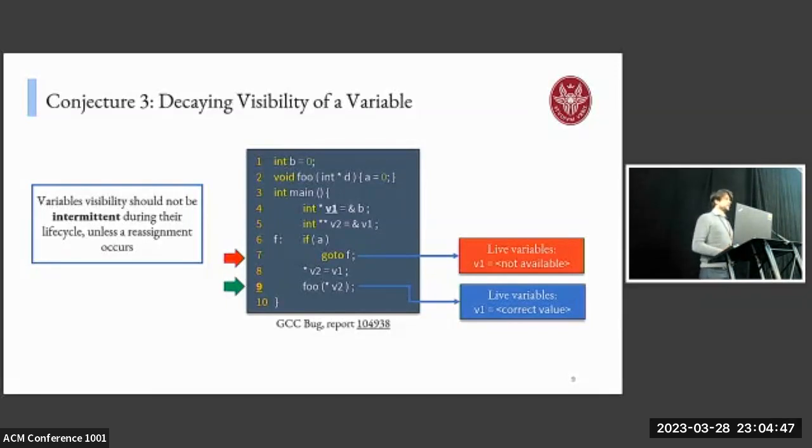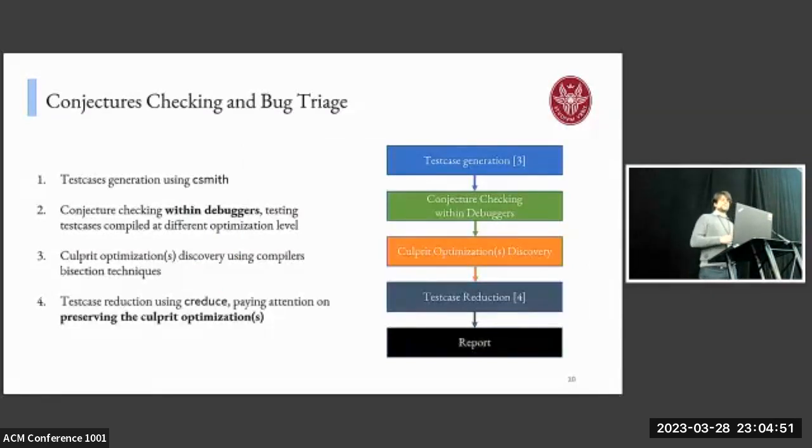To test our methodology, we developed a pipeline for finding and analyzing completeness bugs in an automated fashion. It is made of the following steps: First, we perform a test case generation phase using the compiler fuzzer Csmith. Then we check the conjectures within the debuggers, testing the test cases compiled at different sets of optimization levels. After this process, we end up with a bunch of violations, and we want to remove all the duplicate violations so we don't end up reporting duplicate bugs. To do so, we perform a step of culprit optimization pass discovery using compiler bisection tools. Once we have removed duplicates, we perform test case reduction using Creduce, paying attention to preserving the optimization pass that introduces the bug. Once we have done the reduction, we are ready to report the bug to the bug reporting platform.